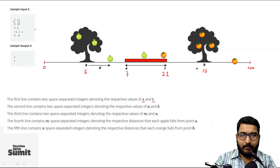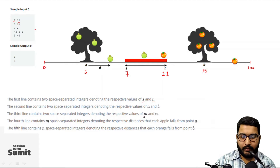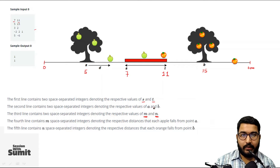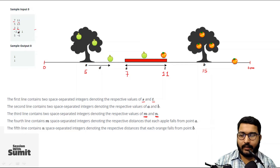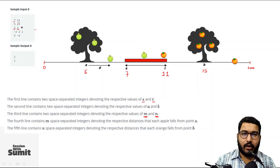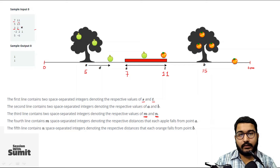Sam's house is between points 7 and 11, including both endpoints. The number of apples falling is given by m, and the number of oranges by n. We have three apples and two oranges that have fallen. Out of these, we need to find how many apples and oranges Sam can consume — only those falling within his area between 7 and 11.